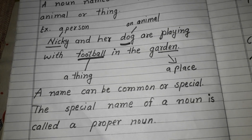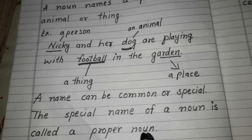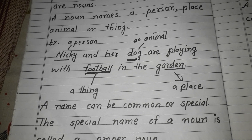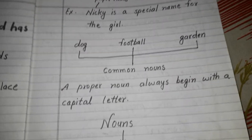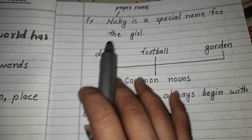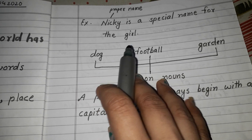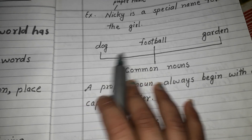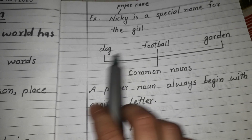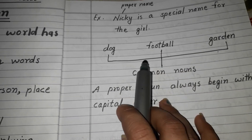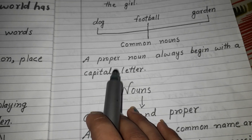A name can be common or special. The special name of a noun is called a proper noun. When we give a special name to a person, animal, thing, or place, it is a proper noun. In our example, 'Nikki' is a proper noun — it is a special name given to the girl. Dog, football, and garden are common nouns because no special names are given to them. A proper noun always begins with a capital letter.